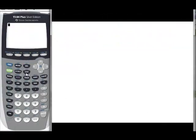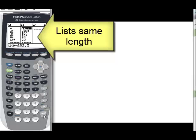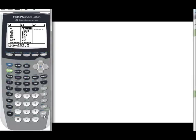Now, we're going to go to stat. We're going to edit our list and put in our data. Here is my data input. Remember to always check to make sure your lists are the same length to make sure that the data is correct. If they're not the same length, you'll get an error.